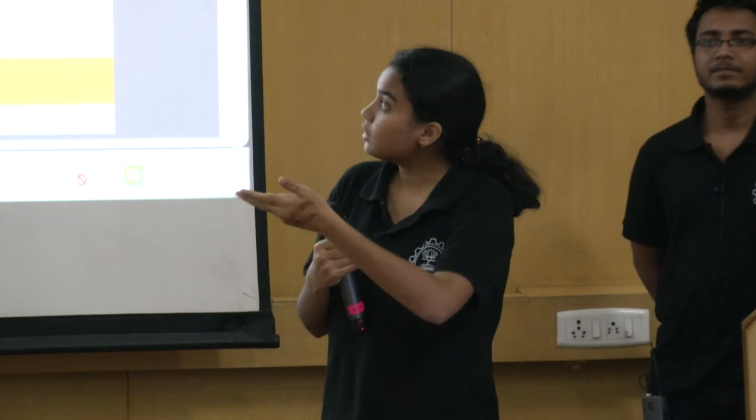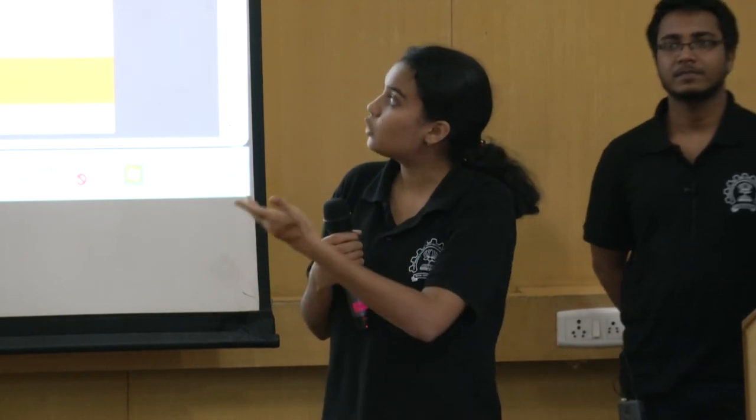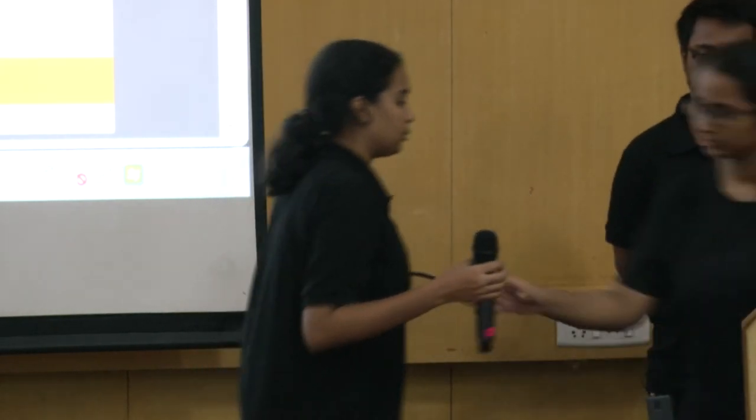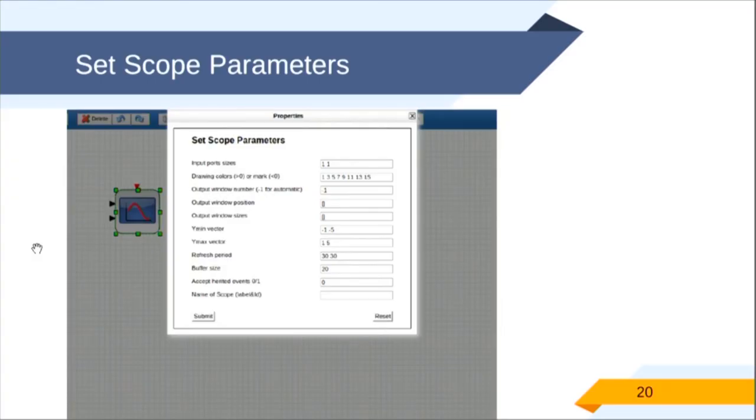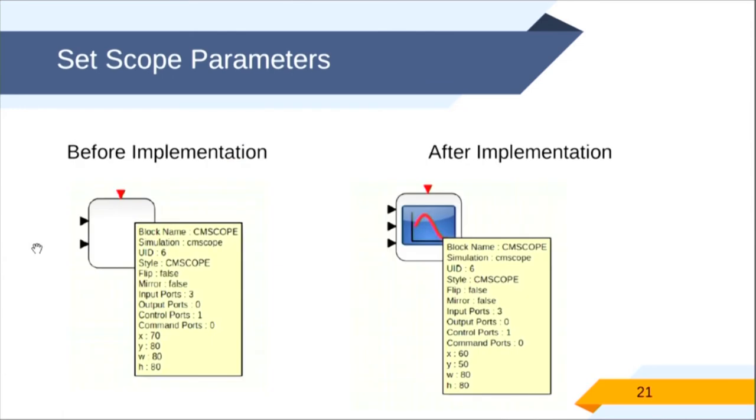For the set and get functionalities, I had to implement some Scilab functions into JavaScript language. Adding to what my friends have done, after we set the parameters to change the block parameters, this is how we submit them. In the previous implementation, you can see that in the CMscope block, it shows that there are three input ports, but actually there are two input ports, and the image is also getting lost. The previous implementation wasn't compatible with all kinds of blocks, and moreover, image was getting lost. We have implemented it in order to reflect the correct changes.